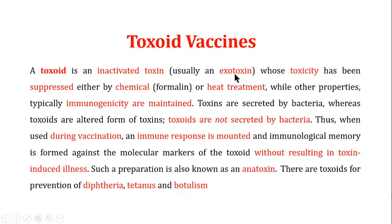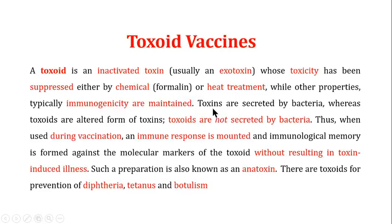Another important type of vaccine is the toxoid vaccine. A toxoid is an inactivated toxin — usually an exotoxin secreted by pathogenic organisms — whose toxicity has been suppressed by chemical treatment (usually formalin) or heat treatment. Importantly, these treatments suppress toxicity without affecting immunogenicity. Toxins are naturally secreted by bacteria, while toxoids are the altered forms created through chemical or heat treatment and are not secreted by bacteria.